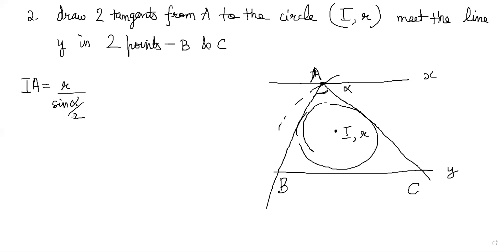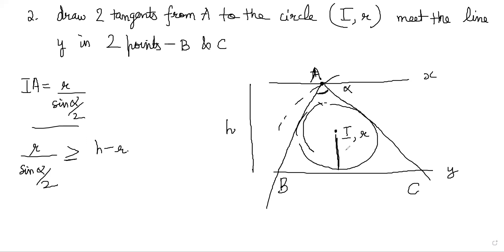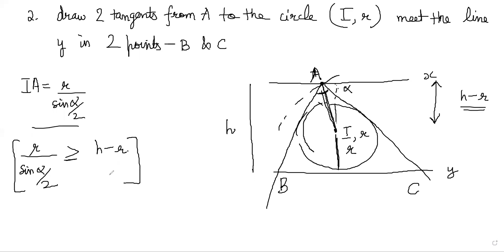We will have a solution here only if R divided by sine(alpha/2) is greater than or equal to H minus R. Why? Because H was this distance, R was the incircle radius, and the IA radius must be greater than the remaining distance H minus R. Since IA is not perpendicular to line X, IA must be bigger than H minus R. So the condition is sine(alpha/2) less than or equal to R divided by (H minus R).